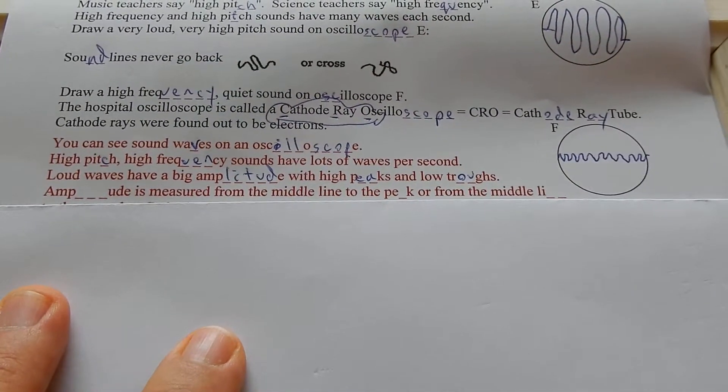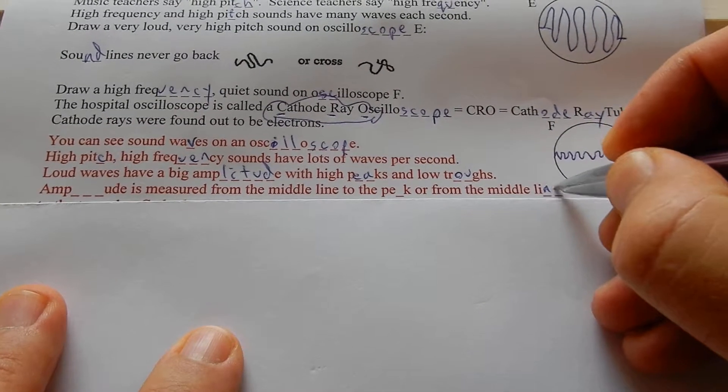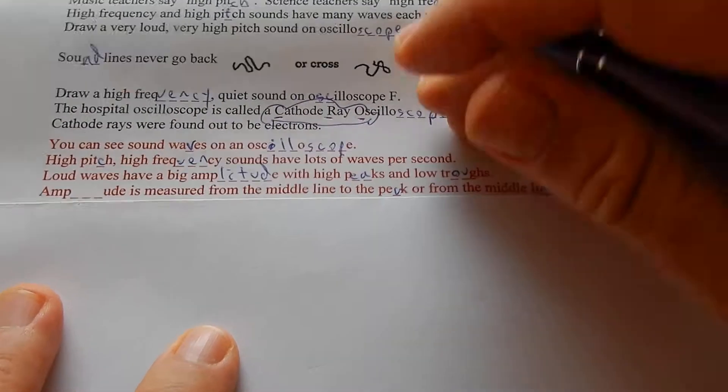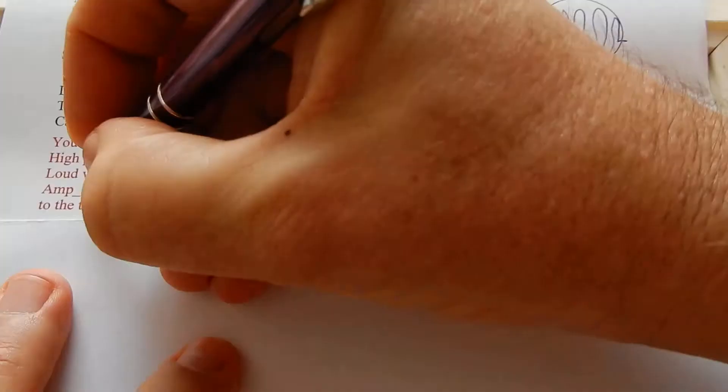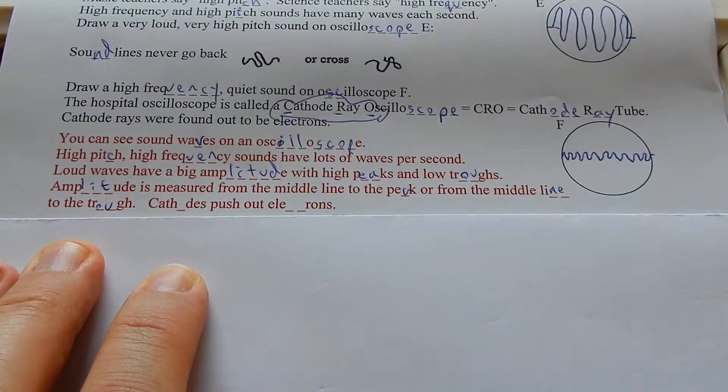Amplitude is measured from the middle line up to the peak or from the middle line to the trough. Cathodes push out electrons.